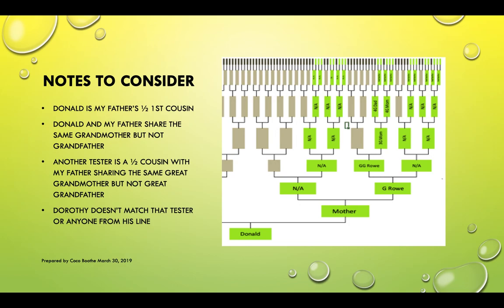The reason I'm using Donald and not my father to determine my relationship to Dorothy Grant is because if I did this exercise with my father, there would be too many possibilities. Using Donald narrows it down because his relationship to my father is limited — they share the same grandmother but not the same grandfather.